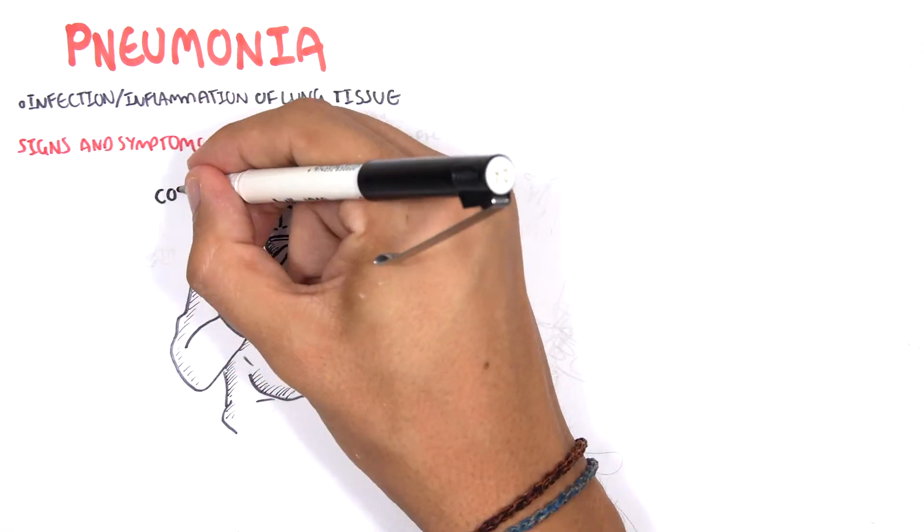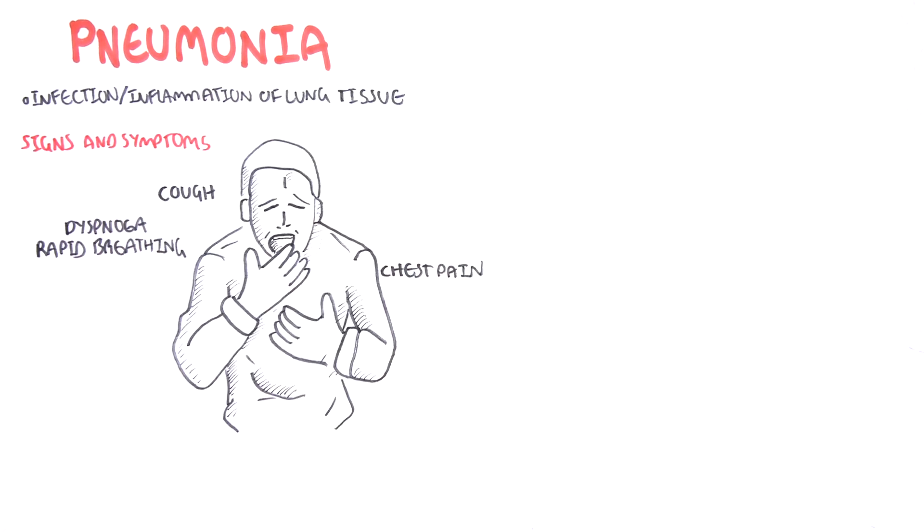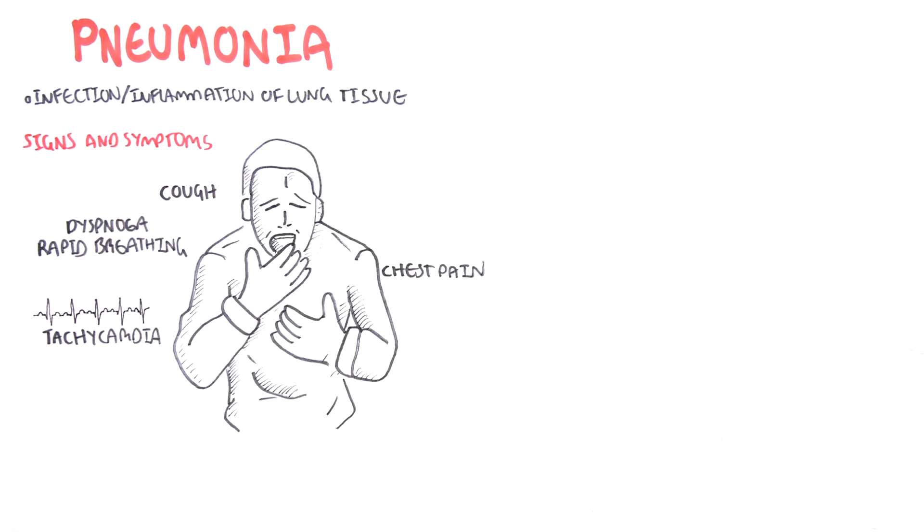Some signs and symptoms of pneumonia include cough, dyspnea, rapid breathing, chest pain and tachycardia.